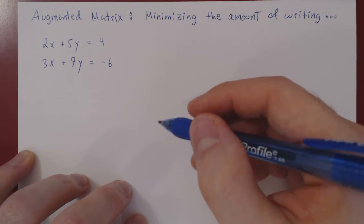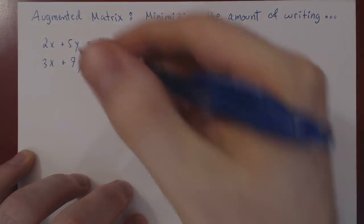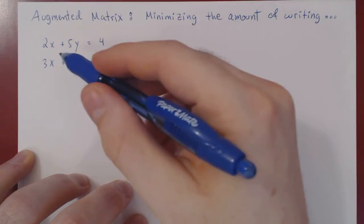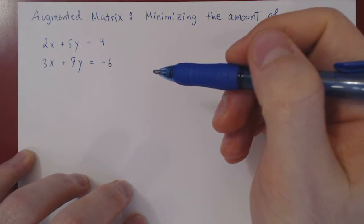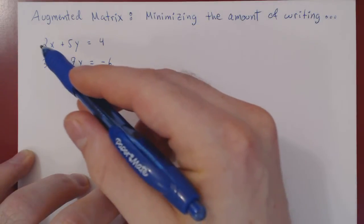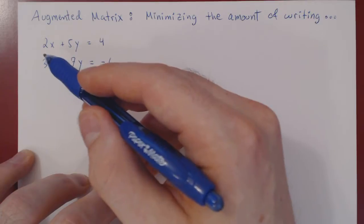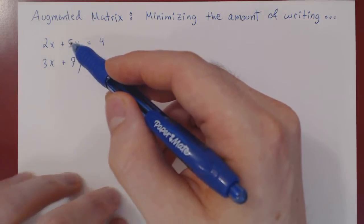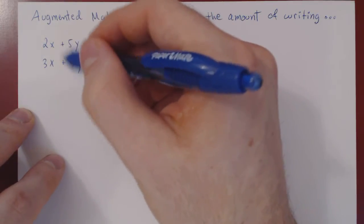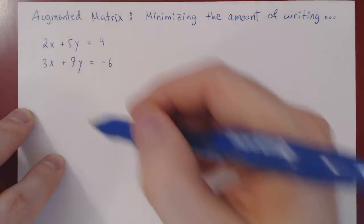The idea is, when we reduce this linear system, what can we drop in terms of writing? What symbols can we drop, as long as we are consistent? A linear equation always looks the same — it's always some real number multiplying a variable plus some other real number multiplying another variable. So it's always a plus in the middle. We can drop the pluses.